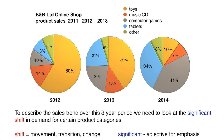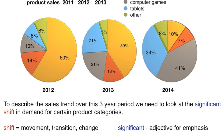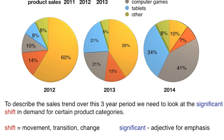Let's start with the opening statement. To describe the sales trend of this three-year period, we need to look at the significant shift in demand for certain product categories. Notice the colored words here — these are keywords. In a business presentation, they make your presentation more interesting. If you are doing an IELTS exam, examiners really like a variety of language and vocabulary. Here I have emphasized 'significant,' which is an adjective for emphasis, and 'shift,' which implies movement or change.